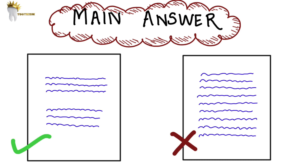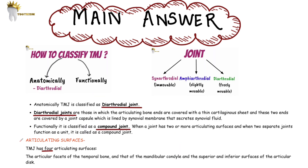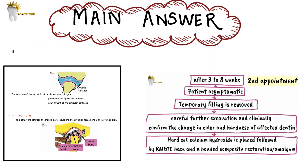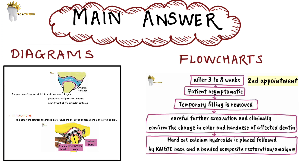Divide your answer into multiple paragraphs instead of cramming everything into one. Underline the crucial keywords and definitions, and for headings you can use block letters. If you write the answer in this way, it will be very easy for the examiner to check if you have included everything and give you better scores.